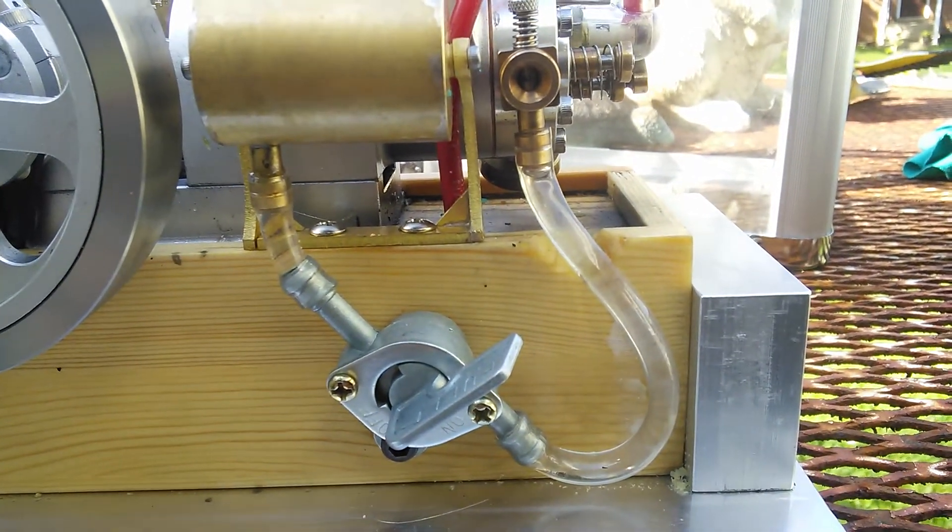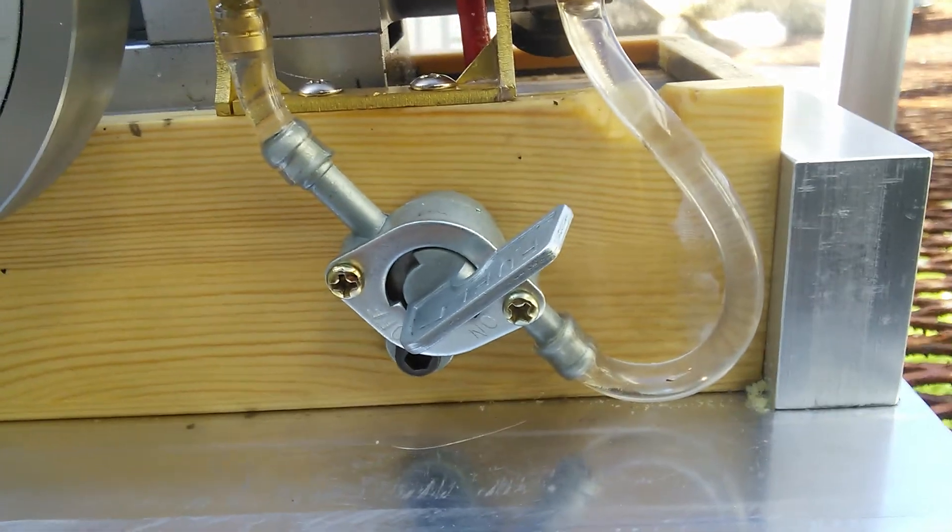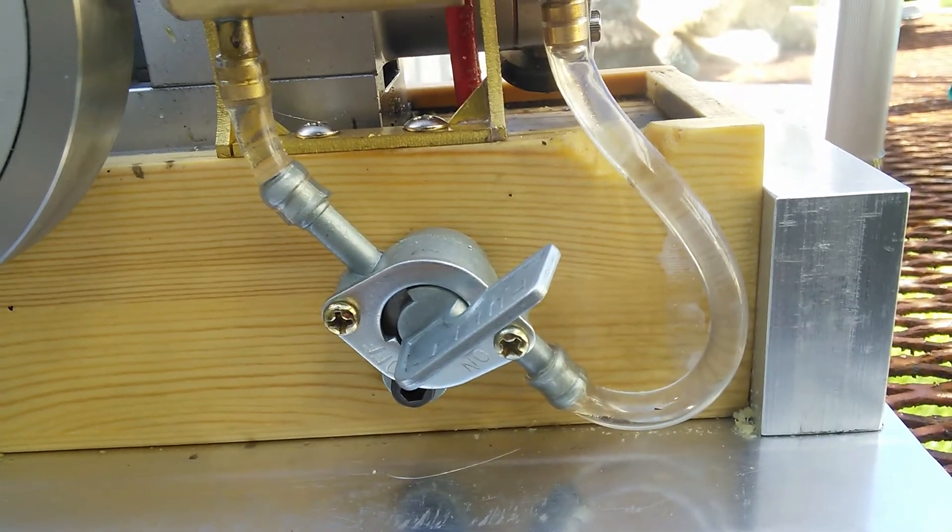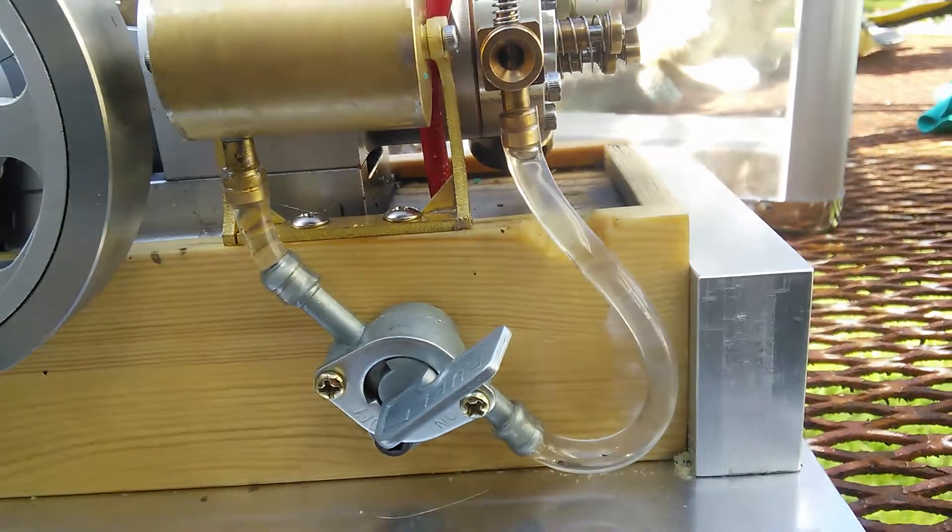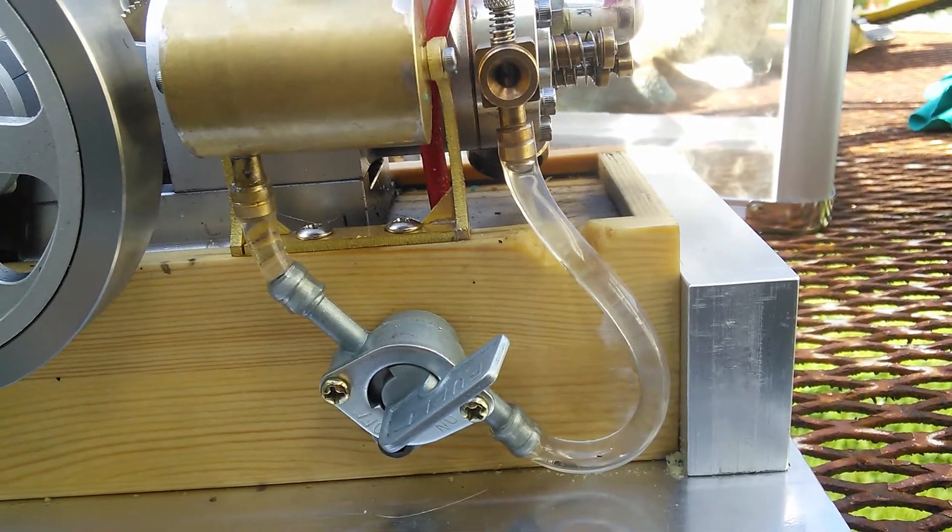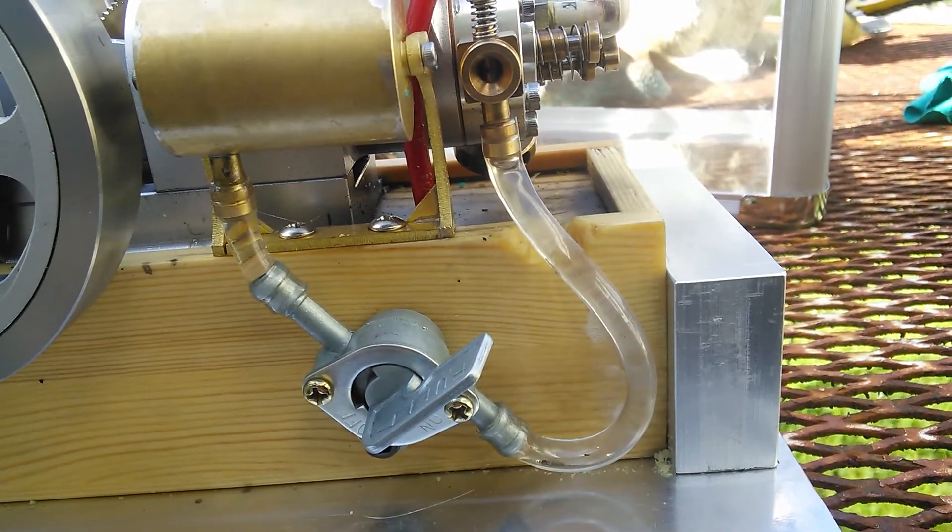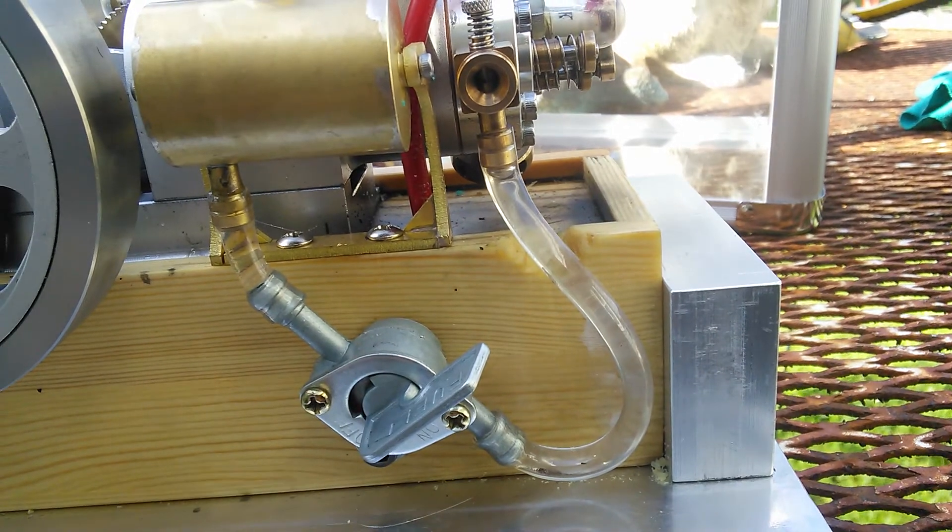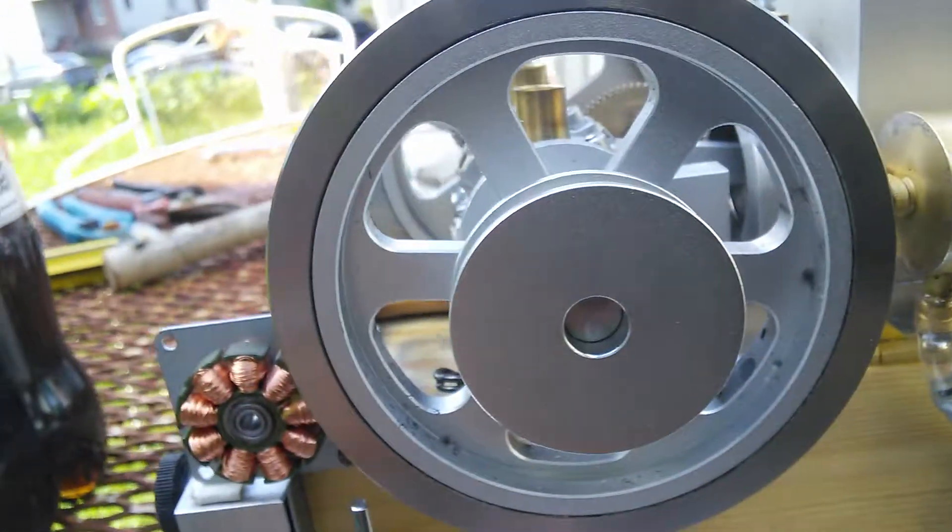So here I added a fuel shut-off valve, which works very well. Usually I let the engine run and turn the valve off so the carburetor runs dry. Here I added a three-phase AC motor.